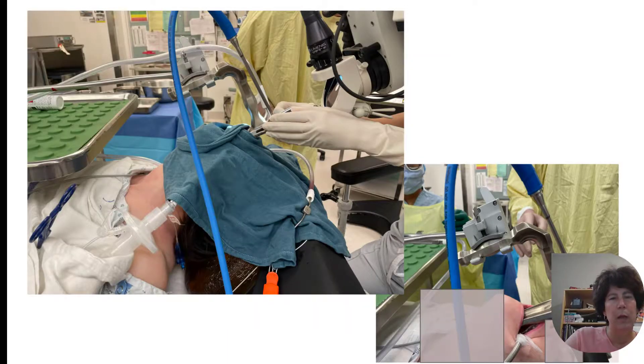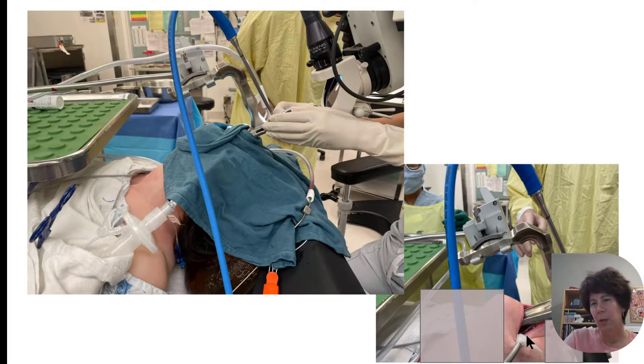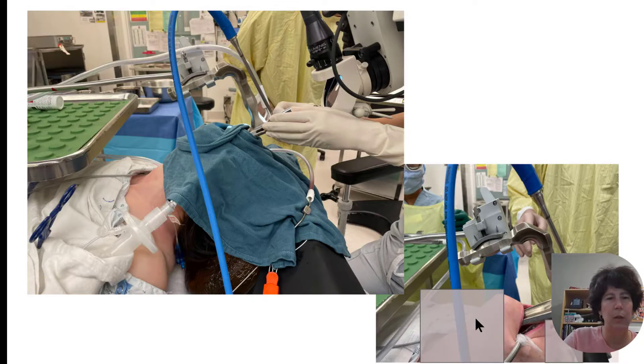This is what it looks like when your suspension laryngoscope is in. So you have this scope here. Your tube is under cover. You have your light hooked up and that is a suction that comes down into the scope. And the tube comes out the left side of the mouth here, just taped onto the left.